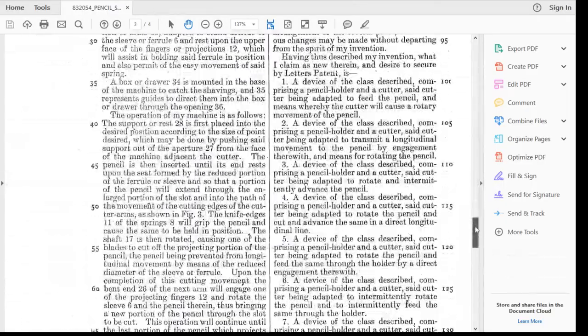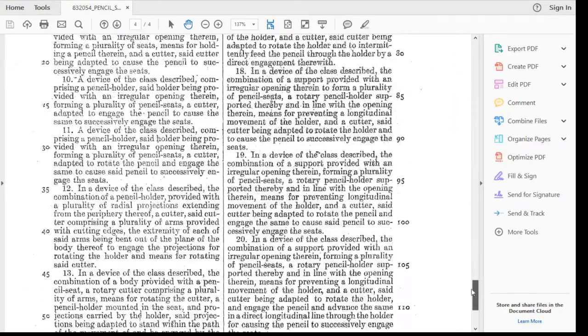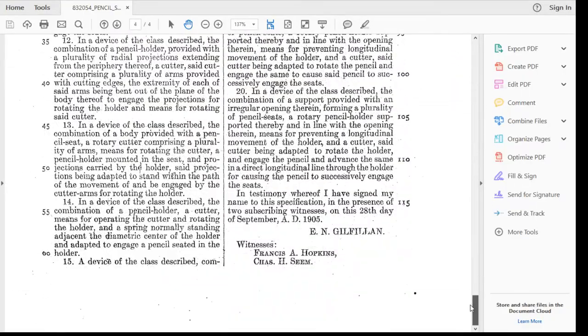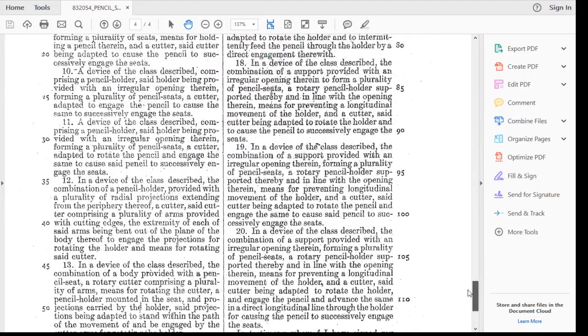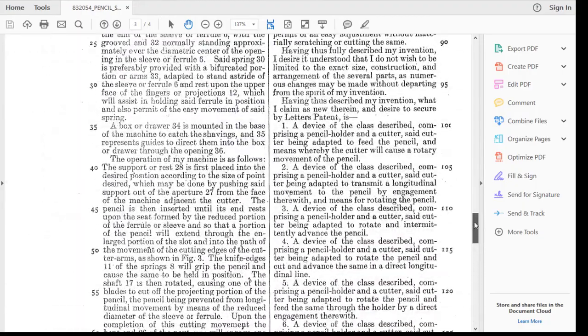And I wonder how many claims it has here. Claims, oh, lots of claims. Amazing, it has 20 claims, which is quite unusual for old patents. Usually they don't have that many claims. Let's just read number one here: a device of the class described comprising a pencil holder and a cutter, said cutter being applied to feed the pencil and means whereby the cutter will cause a rotary movement of the pencil. So not only does the cutter cut, but it indexes the pencil.